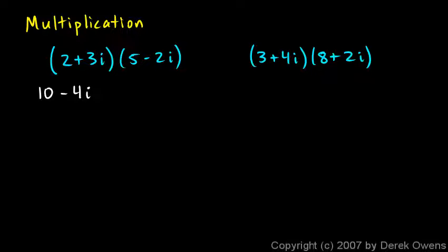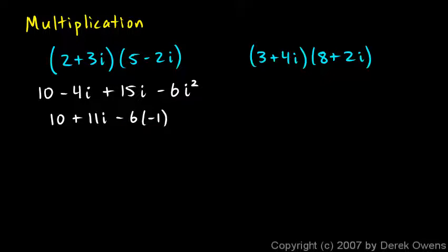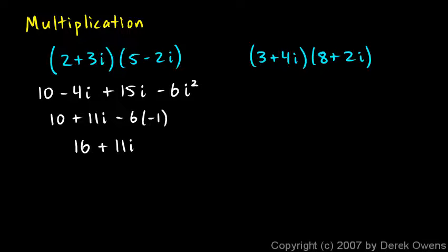The inner terms: 3i times 5 gives positive 15i. The last terms: 3i times negative 2i gives negative 6i squared. Simplifying: I keep the 10, combine negative 4i and 15i to get plus 11i, and the i squared is negative 1, so negative 6 times negative 1 is plus 6. Combined with 10, that gives 16 plus 11i. That's my answer — multiplying two complex numbers gave a complex number.